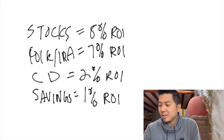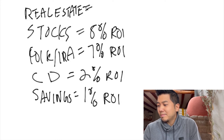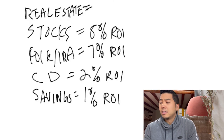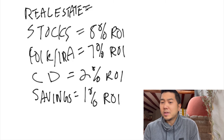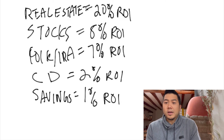The reason this channel was created is real estate. I'm putting real estate at the top because I believe it's the most powerful vehicle. I don't do anything that gives me less than 20%, so let's go with 20% ROI.